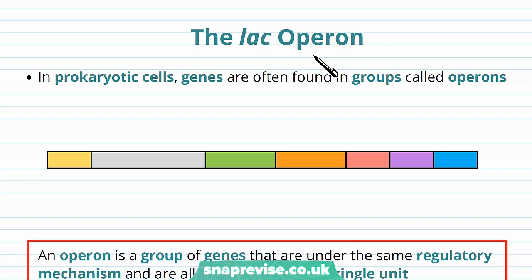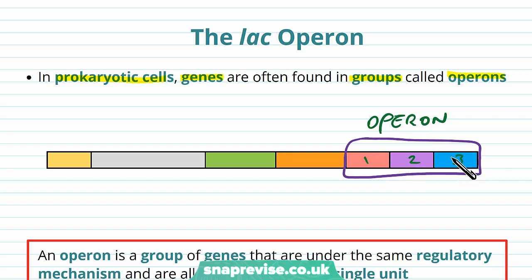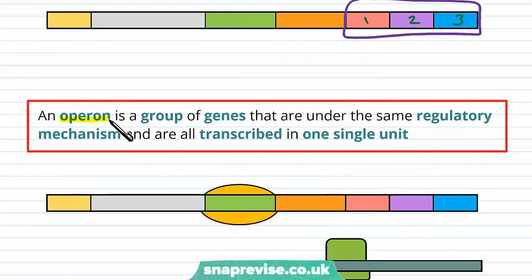The lac operon has several parts to it, and we're going to go through each of these parts and talk about their functions. In prokaryotic cells, genes are often found in groups called operons. What we tend to see is not just one gene on its own followed by another gene — we can find one or more genes grouped together into a particular region called an operon. For example, here in the lac operon we have three genes. By definition, an operon is a group of genes under the same regulatory mechanism, and they all get transcribed in one single unit.